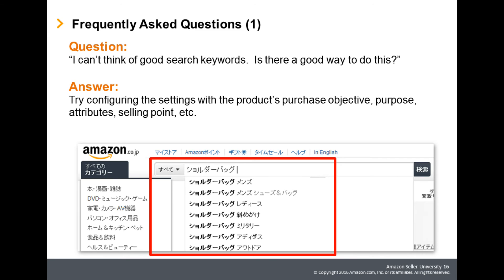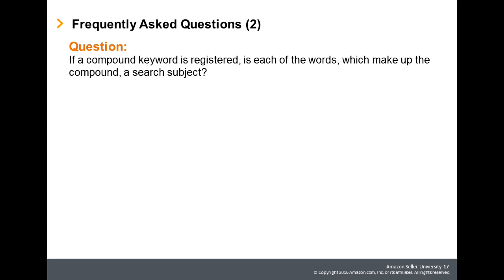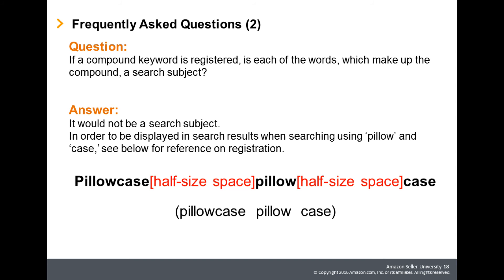The next question: if a compound keyword is registered, is each of the words which make up the compound a search subject? For example, if 'pillowcase' is configured as a search keyword, would 'pillow' and 'case' be search subjects? The answer is, it would not be a search subject. In order to be displayed in search results when searching using 'pillow' and 'case', each word — 'pillowcase', 'pillow', and 'case' — need to be registered separately.